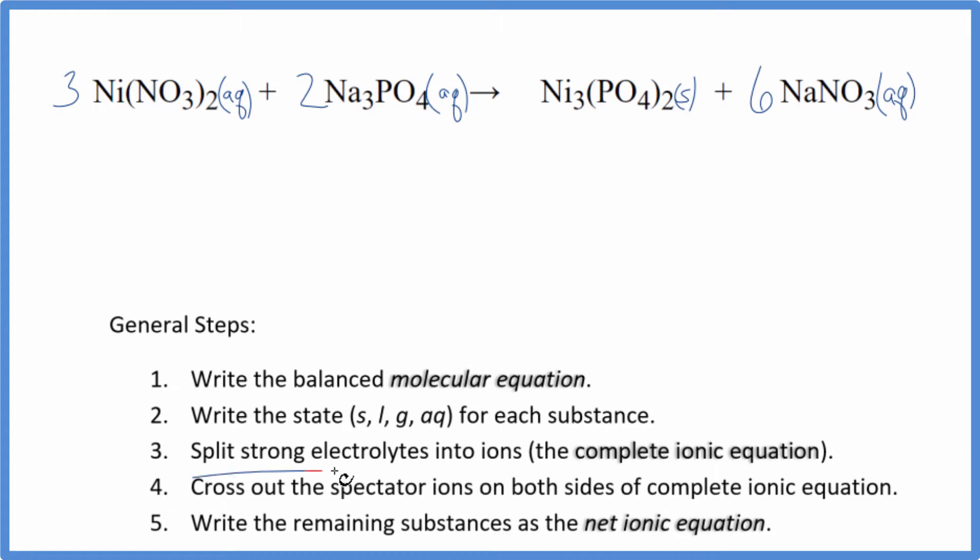Now we can split the strong electrolytes into their ions. And this will give us the complete ionic equation. So we don't know the charge on nickel because it's a transition metal. But we do know that the nitrate, the whole thing here, is one minus. Since we have two, that's two minus. Nickel has to be two plus. So we have three nickel(II) ions.